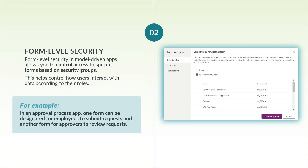For model-driven apps, form-level security enables you to restrict access to specific forms based on security groups. This is particularly useful for controlling how users interact with data based on their roles. For instance, in an approval process app, you might have one form for employees to submit requests and another form for approvers to review them. Form-level security is ideal for such scenarios.